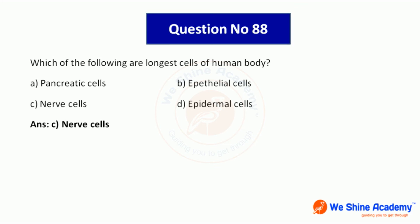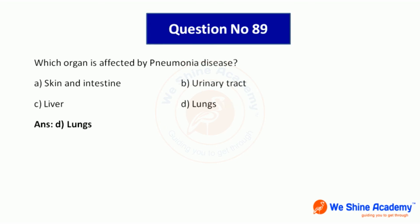Question number 88: Which of the following are the longest cells of the human body? Question number 89: Which organ is affected by pneumonia disease? Pneumonia affects the lungs.